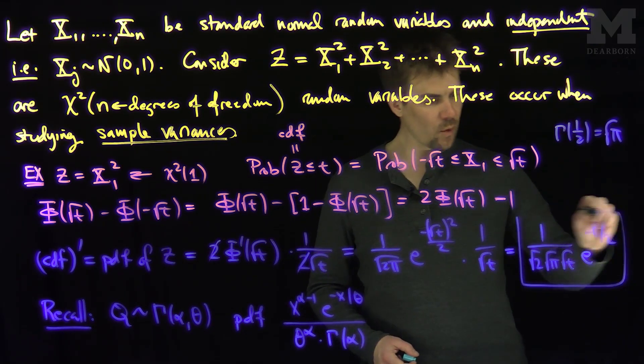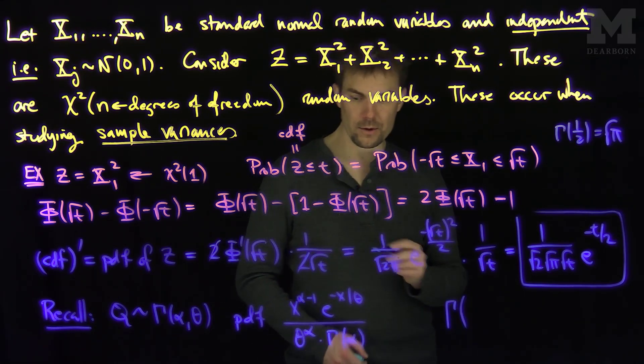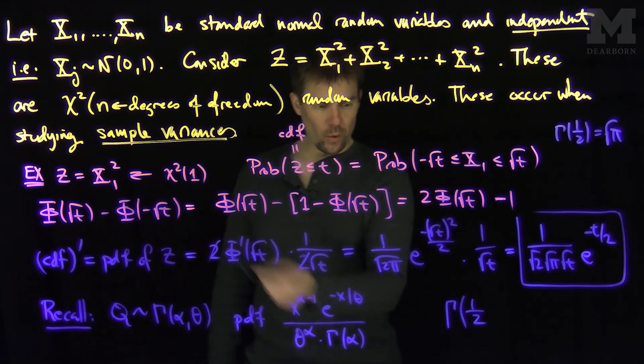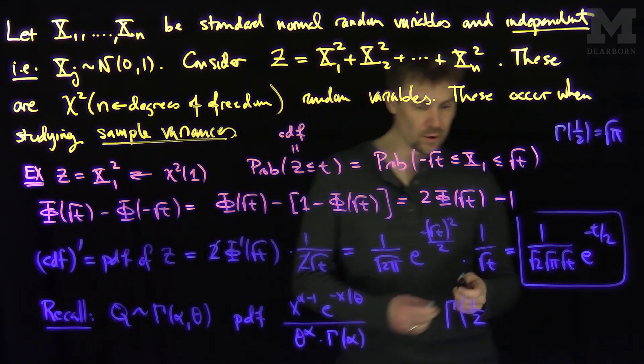So, this distribution is gamma distributed with alpha being equal to one-half, and with theta being equal to two in this case.